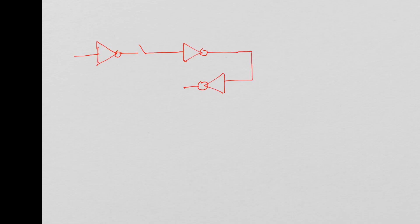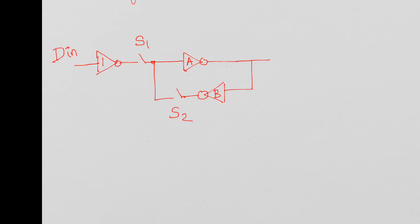These are the inverters of the latch and the two switches. You have the D input, switch S1, switch S2, inverters A and B, and the inverter that brings in your input. In the latch, switch S1 was controlled by enable — when enable is high, S1 was closed, and S2 was closed when enable is low, or clock bar.